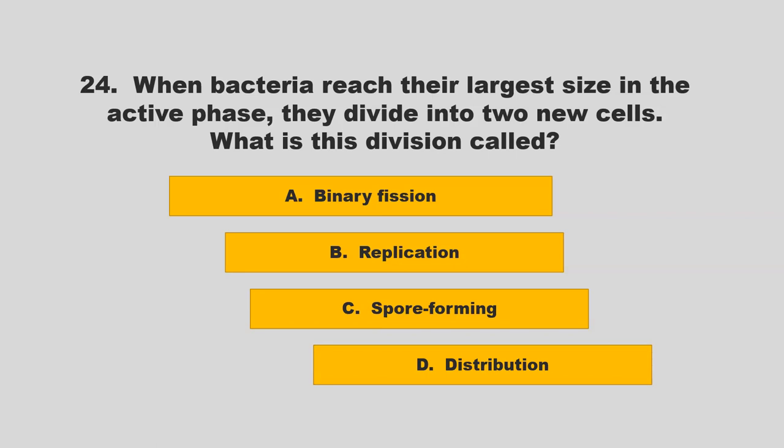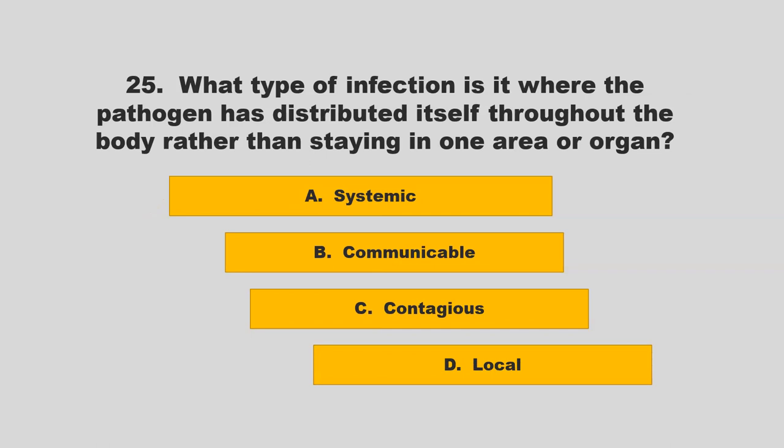When bacteria reach their largest size in the active phase, they divide into two new cells. What is this division called? Options: binary fission, replication, spore forming, or distribution. The correct answer is A: binary fission.